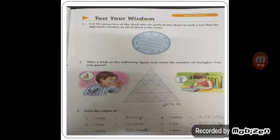Now test your wisdom. Here some questions are given. Cut the given face of the clock into six parts so that any shape gives the aggregate number in all of them is the same. When we add 12 plus 1 equals 13, 11 plus 2, 10 plus 3, 9 plus 4, 8 plus 5, 7 plus 6, all of them sum to 13. In this way we have cut the clock. Take a look at the following figures and count the number of triangles. There are total 27 triangles given here.